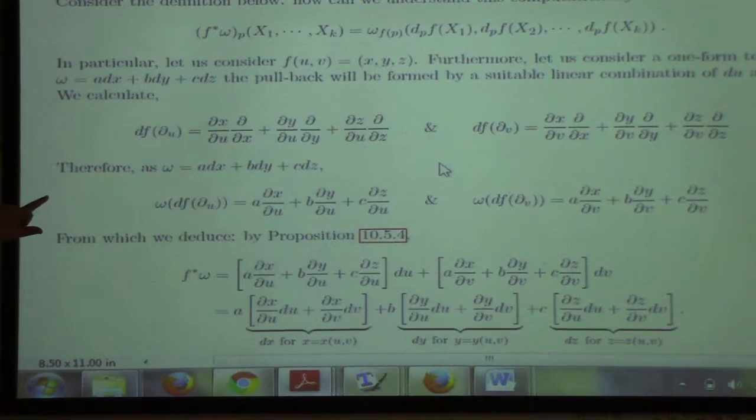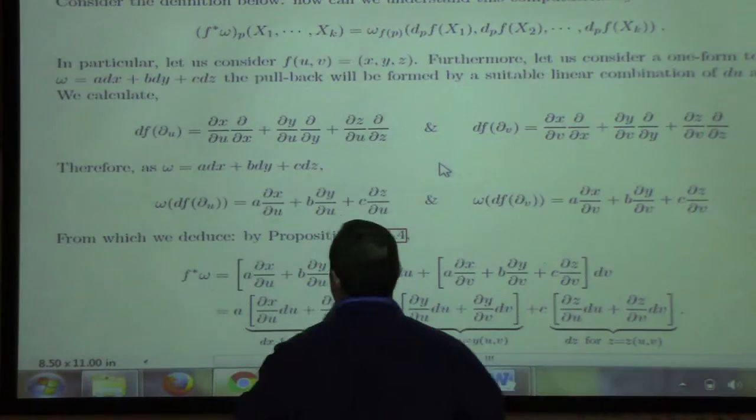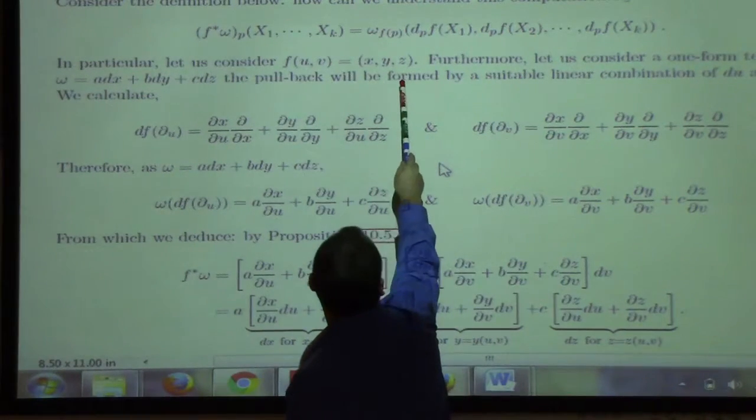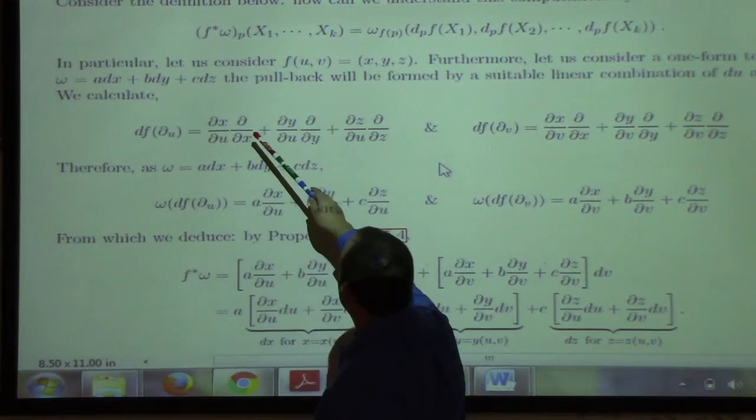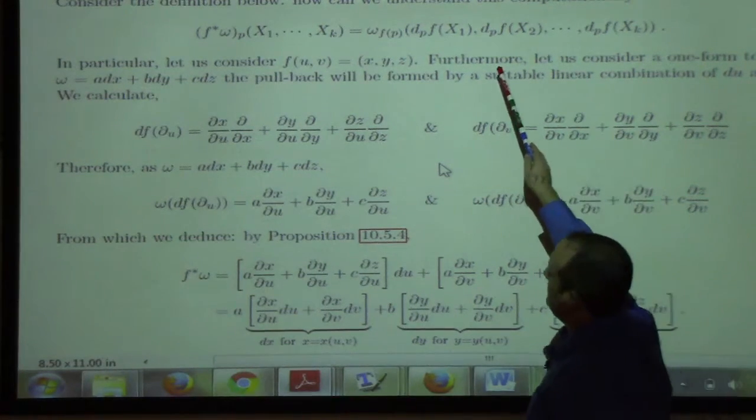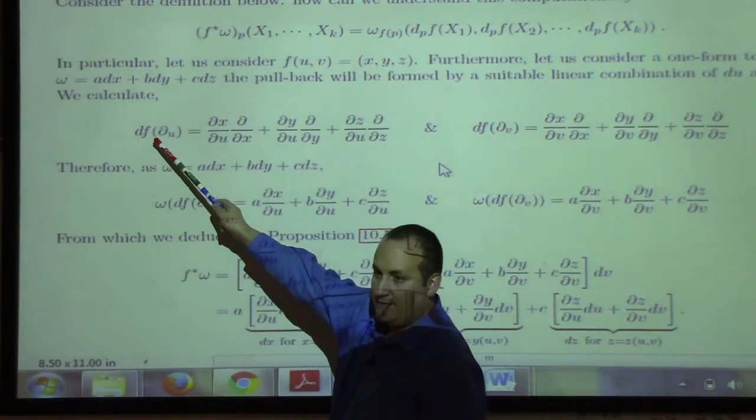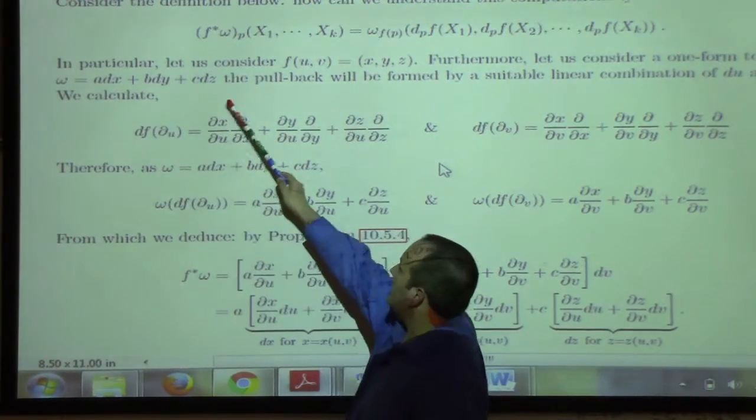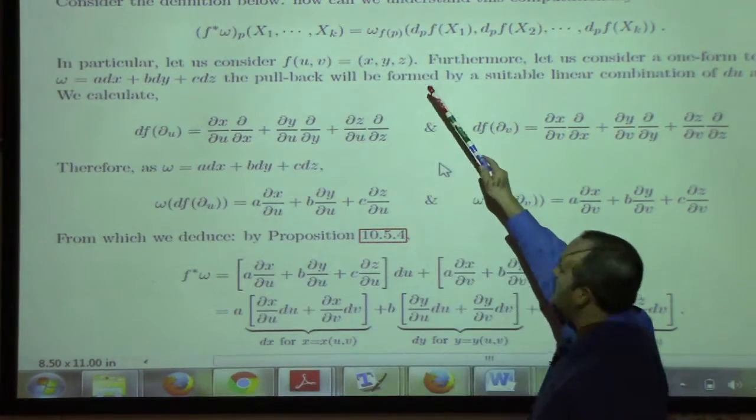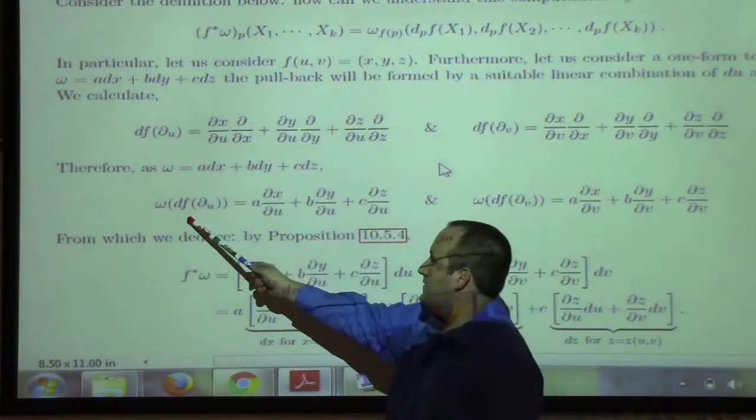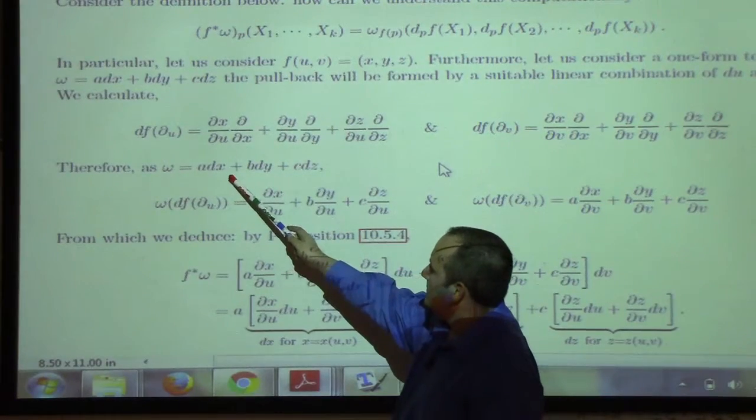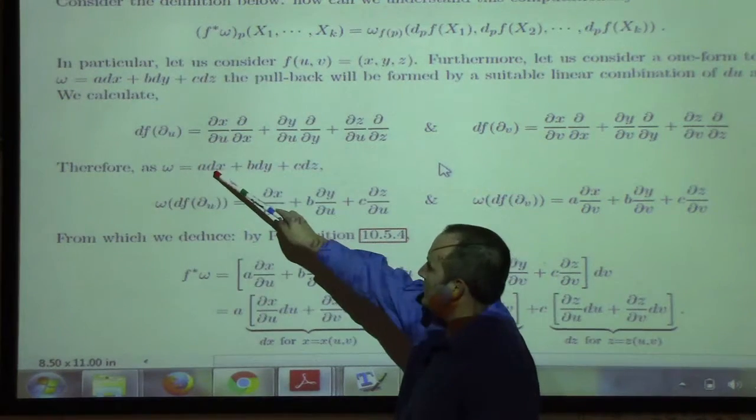So I look at a function from r2 to r3, f. And I look at a one form, a dx plus b dy plus c dz. I say, okay, so what's the pullback of this one form from r3 to r2? What does it look like? And so I have to calculate df of partial u and df of partial v because those are the basis for the vector fields in the domain, right? The domain has coordinates u, v, so the tangent space is spanned by partial u and partial v. So if I calculate, then I calculate df of partial u and df of partial v in order to figure out what the pullback looks like.